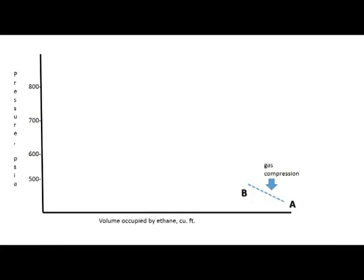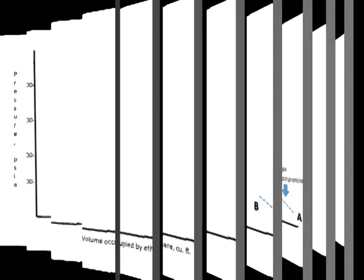Let's look at slide number one. From slide number one, you can see that we are plotting pressure in PSIA against volume of ethane in cubic feet. If you look at where we start, labeled as A, and we begin to move the plunger in, reducing the area, the gas becomes compressed and moves to point B. As you can see, pressure at this point is increasing.